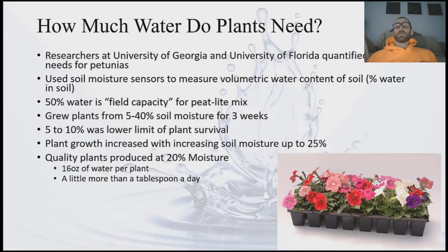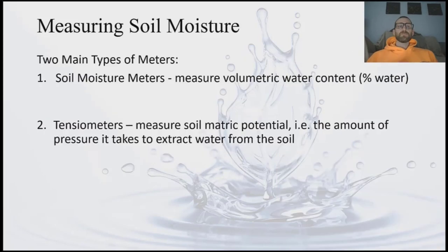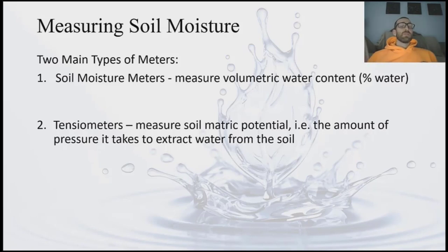This is important if we're trying to conserve water and growing petunias — we now have a measure of how much water to provide each day. To maximize water savings, we have two ways of measuring soil moisture to ensure we only irrigate when required. We have soil moisture meters that measure volumetric water content — the percent of water in our soil — and tensiometers, which measure soil matric potential, essentially the amount of pressure it takes to extract water from the soil.